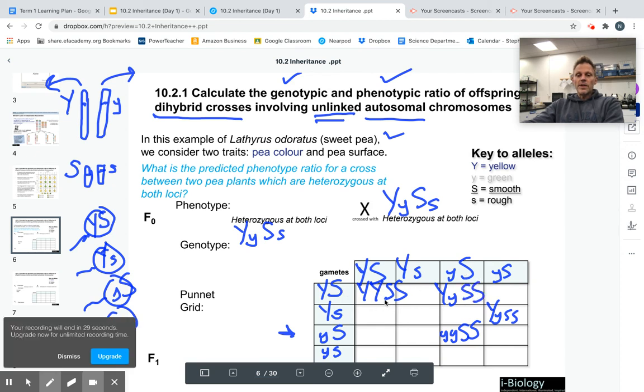So we looked at the phenotypes. Big Y, big Y, big S, big S. That is going to be a yellow smooth pea. We're also going to have a yellow smooth pea here. Big Y, little y, because that's dominant, it's going to be yellow and smooth is dominant. So that's going to be smooth.